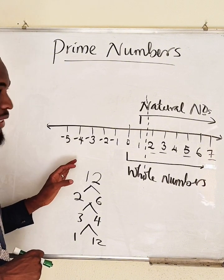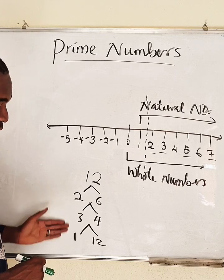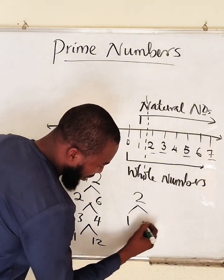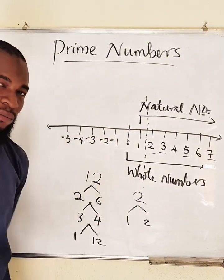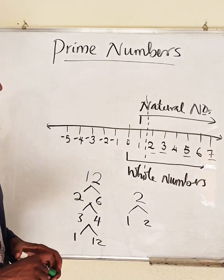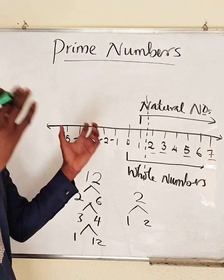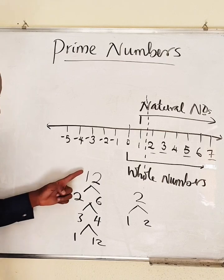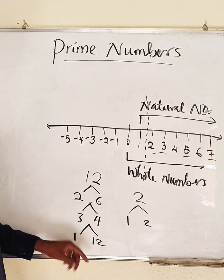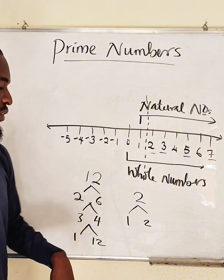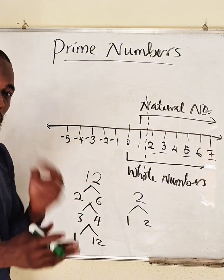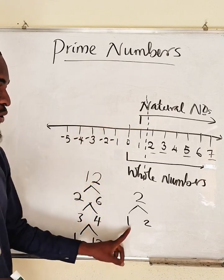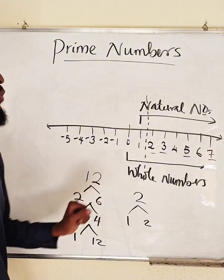For a number to be prime it has to have only two factors — not like 12 which has six factors. For example, with two, I can only multiply one by two to get two, so one and two are factors of two. Another way to define factors: factors of any number are those numbers that can divide that number without a remainder. For 12, one, two, three, four, six, and twelve can all divide 12 without remainder, giving six factors. Anytime you have only two such factors, that number is a prime number.